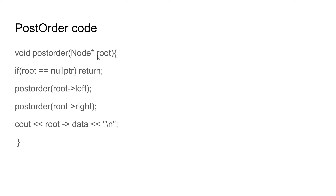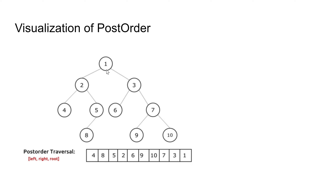Post-order code: if root equals null pointer, return. Call post-order on root dot left, call post-order on root dot right, then cout root dot data. Here's the visualization of post-order traversal.